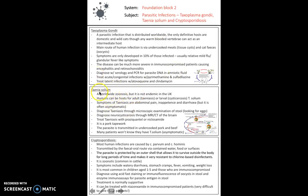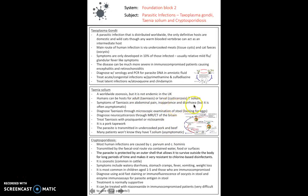Taenia solium is a worldwide zoonosis but not endemic in the UK. It's essentially a pork tapeworm, and the parasite is transmitted through undercooked pork and beef. Most people won't know they have it as it is asymptomatic in many cases, but if symptoms do occur they include abdominal pain and diarrhea.